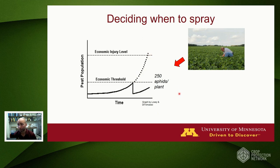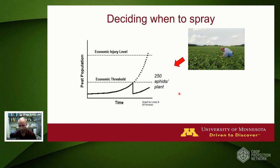At this point the aphids are not yet causing economic losses or yield losses—this is just the point where we proactively knock down the population to prevent those economic problems. So if we scout a field and hit that economic threshold, we want to come in with what we hope is an effective foliar application of an insecticide. This is where resistance issues are posing challenges, because some of these insecticides that were previously effective are not so effective anymore.